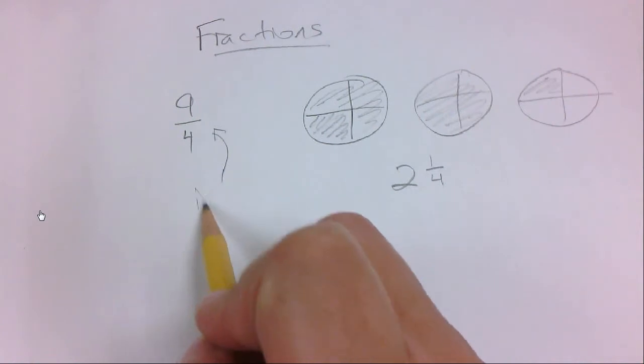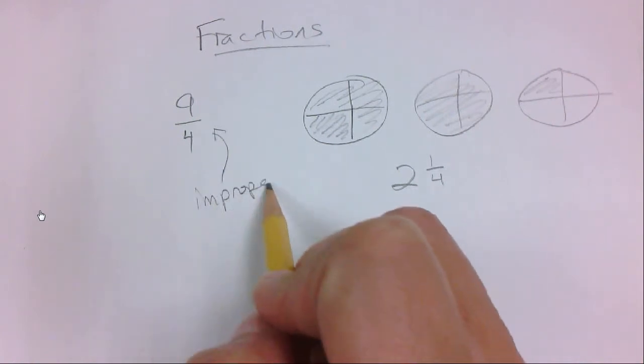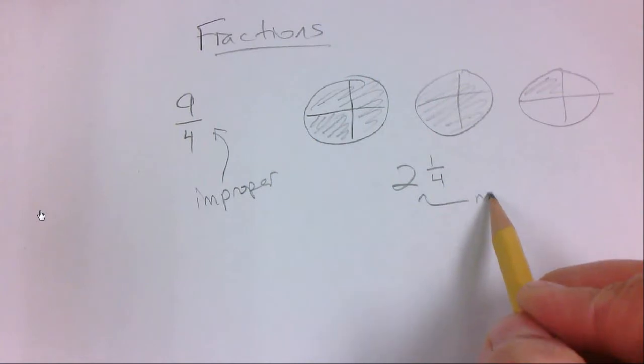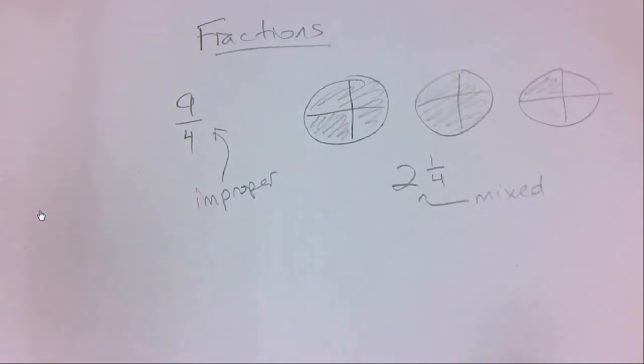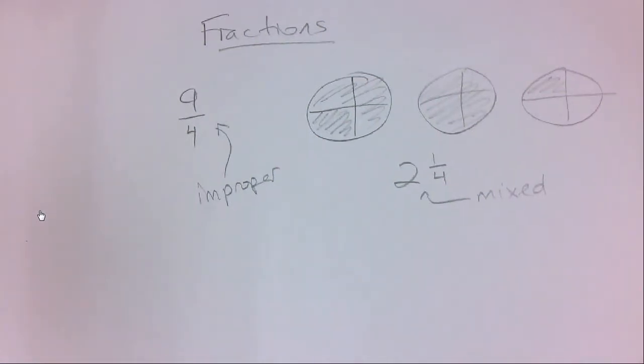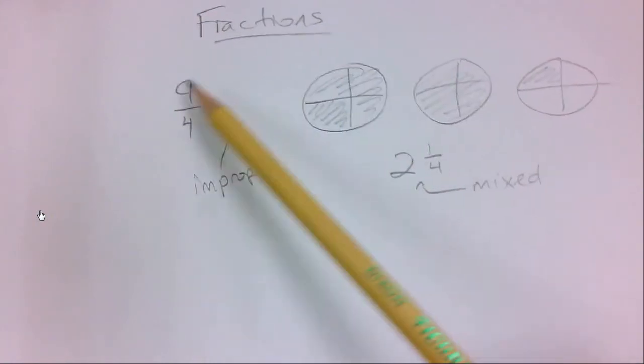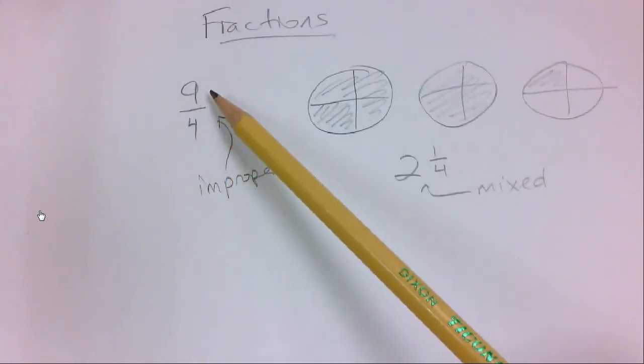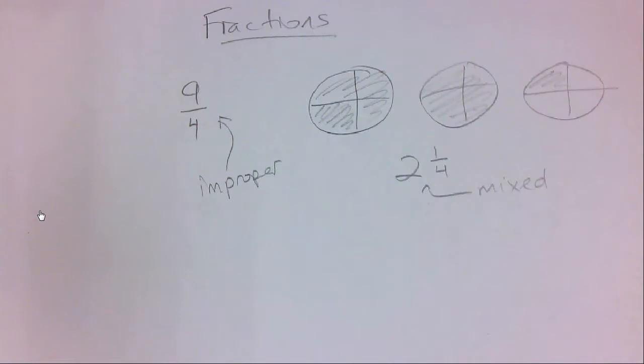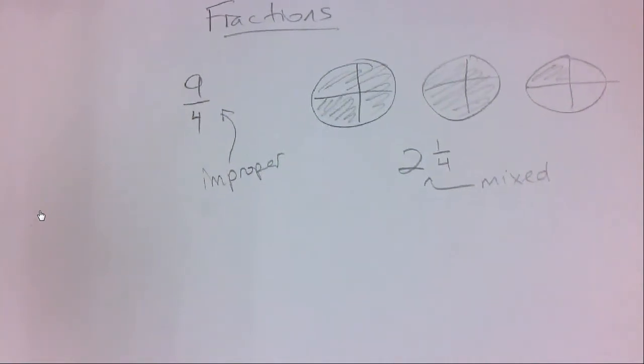So this one over here, this representation is called an improper fraction. And this one over here is called a mixed. Mixed fractions have a whole number part and a fraction part. Improper fraction has just the fraction part, and the numerator is greater than the denominator.